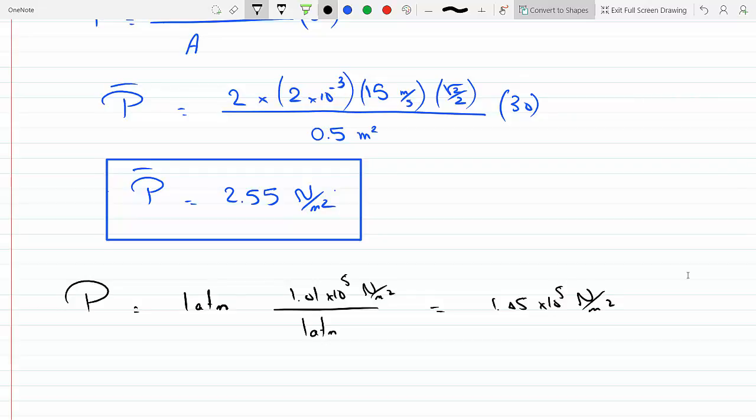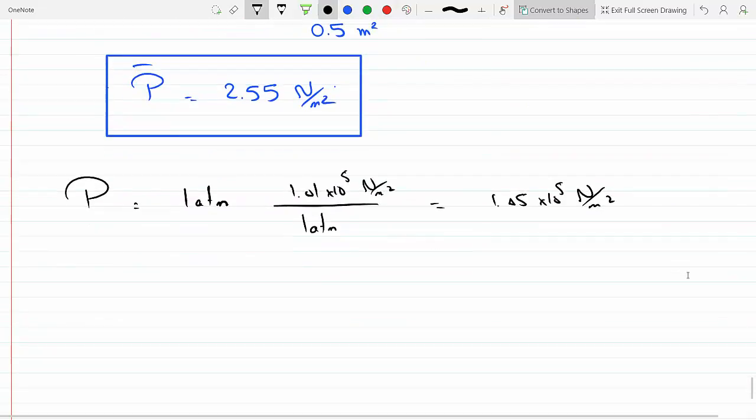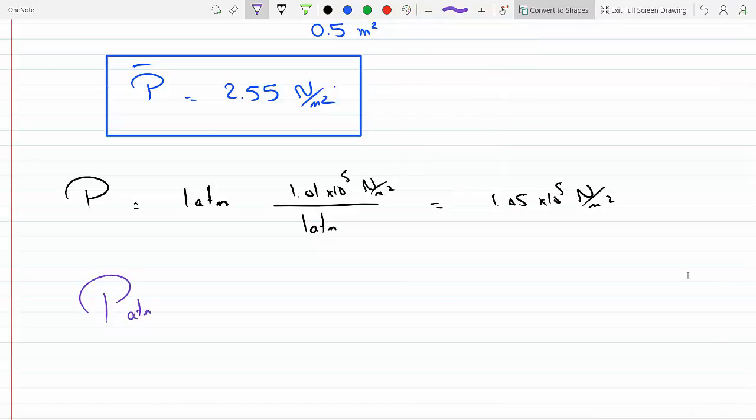If I'm trying to compare the percentage, I could just divide them. I get P_atm over P. Notice how much larger the atmospheric pressure will be than the pressure of the hailstone. If I divide that, I get 4.12 times 10 to the 4.